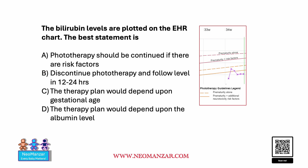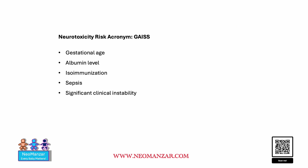The acronym we have to remember is GAISS. Gestational age is provided all the time. Isoimmunization — we are conscious and we check blood group and type, so that is also covered. Sepsis and significant clinical stability are clinical exam findings which we do. The only problem is albumin is not readily available in all cases, and that is included in the risk factors. So we overlook albumin — that's the point we want to make.